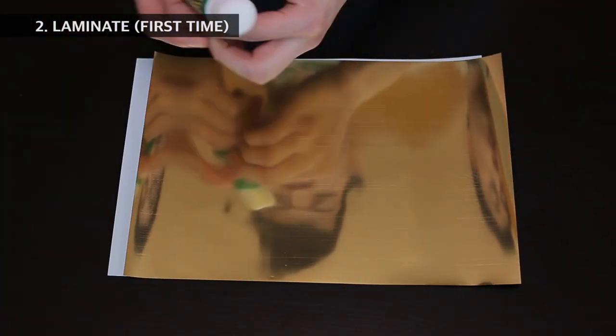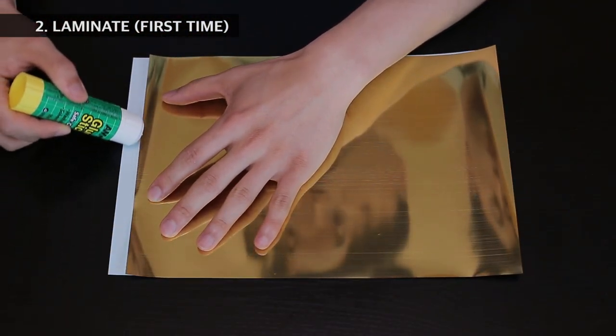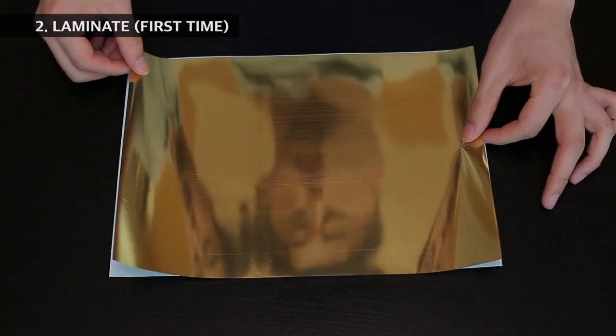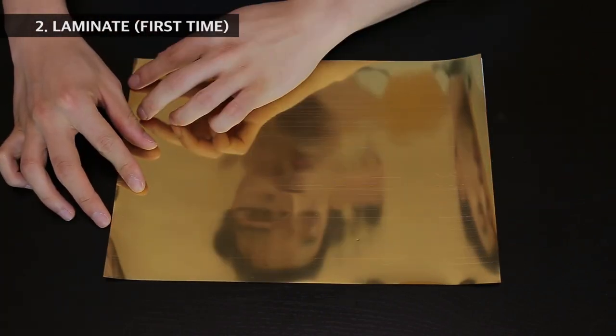Heat up the laminating machine to 120 degrees at the lowest speed. It should roughly take around a couple of minutes to reach the temperature.